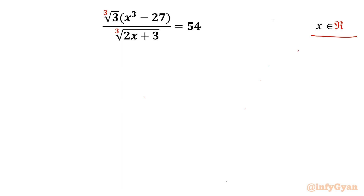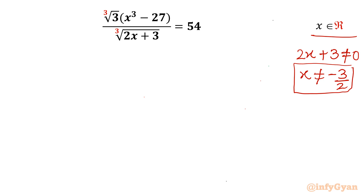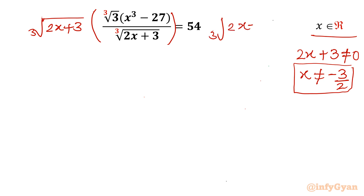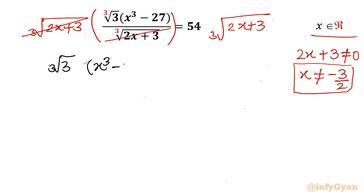Let's get started by writing the domain. The denominator cannot be 0, so 2x + 3 cannot be 0, meaning x cannot equal -3/2. Since x ≠ -3/2, the denominator is non-zero, so we can multiply both sides by the denominator. After multiplying on the RHS as well, those two terms cancel out, leaving: cube root of (3x³ - 27) = 54 times cube root of (2x + 3).